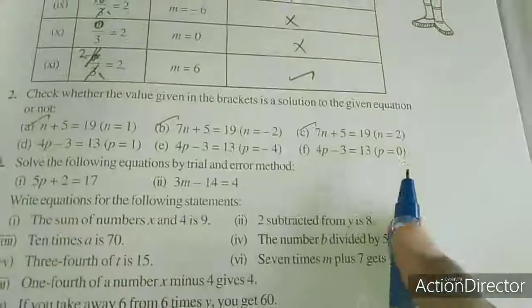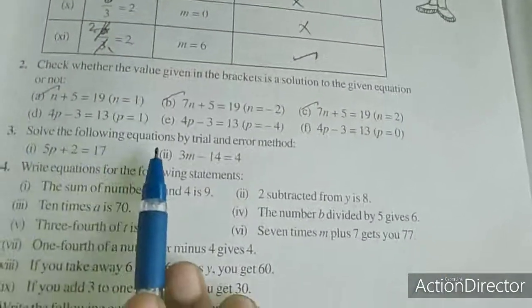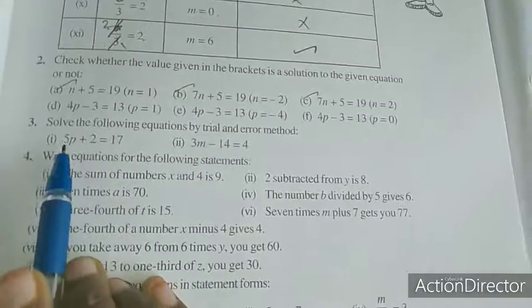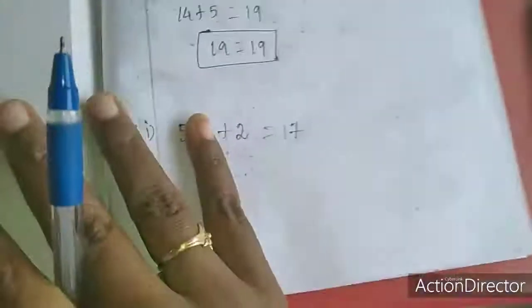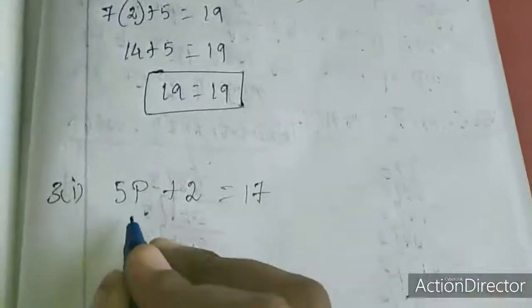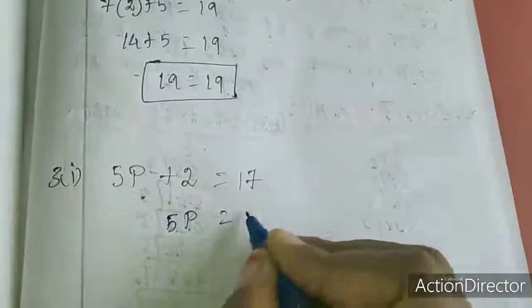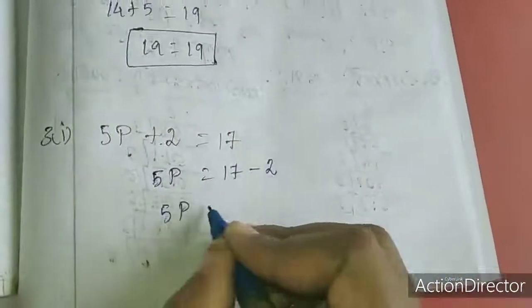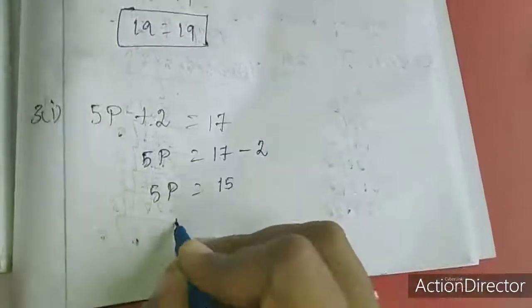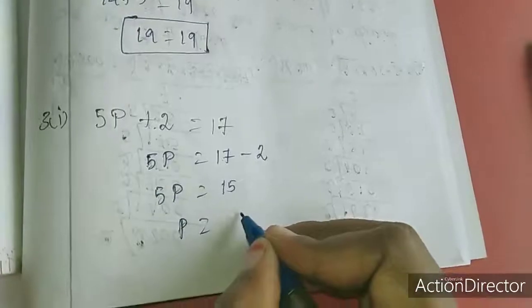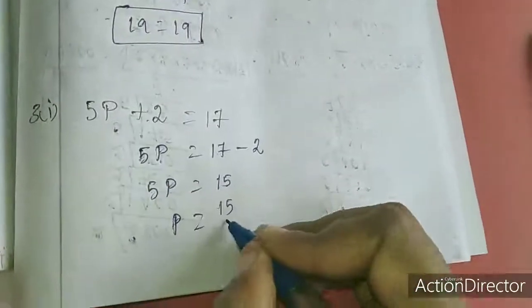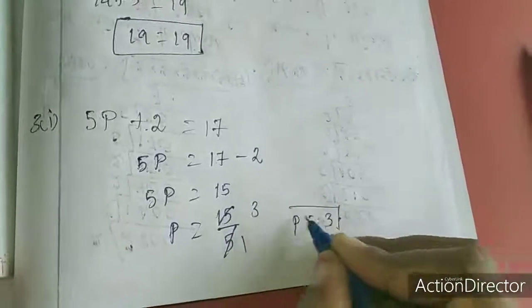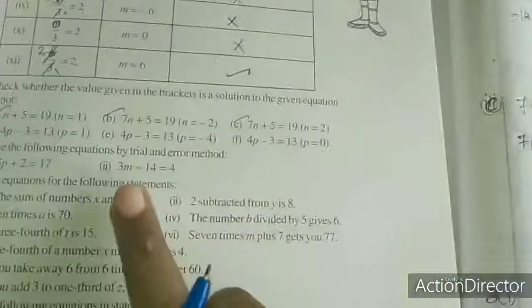The remaining 3 sums are homework for you. Now third question: solve the following equations by trial and error method. Like this only, you have to work out and find the value of p. I will work out the first sum; the second sum is homework for you. For the first sum, I need the p value. 5p here — if plus 2 moves to this side, it becomes minus 2. So 5p equal to 17 minus 2, which is 15. Since we only need p, I bring 5 to this side; it is in multiplication, so coming to this side means divide. 15 divided by 5 is 3. So p value is 3.